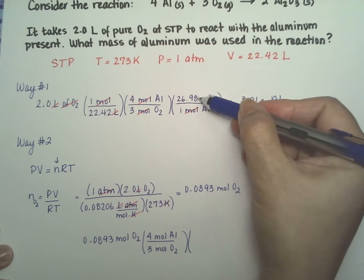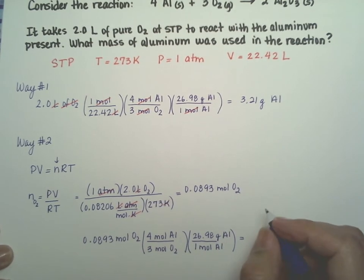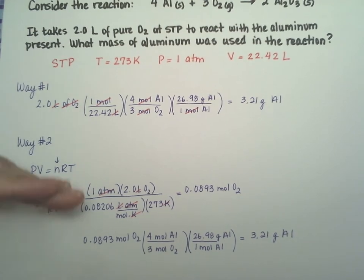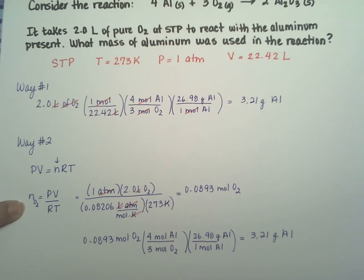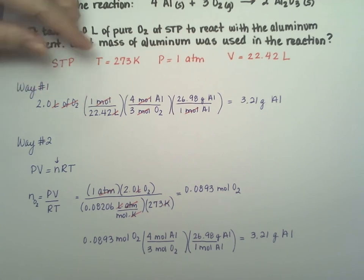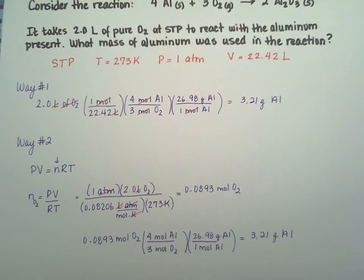And the aluminum, 1 mole is 26.98. Put all that in your calculator, and it gives you the exact same number. So two different ways of doing the exact same calculation. One, we actually use the ideal gas equation. Solve for the moles of oxygen that are contained in these two liters. And then convert to grams of aluminum. The first way was because we remembered that at STP, the volume is 22.42. So two ways, depending on what you remember.